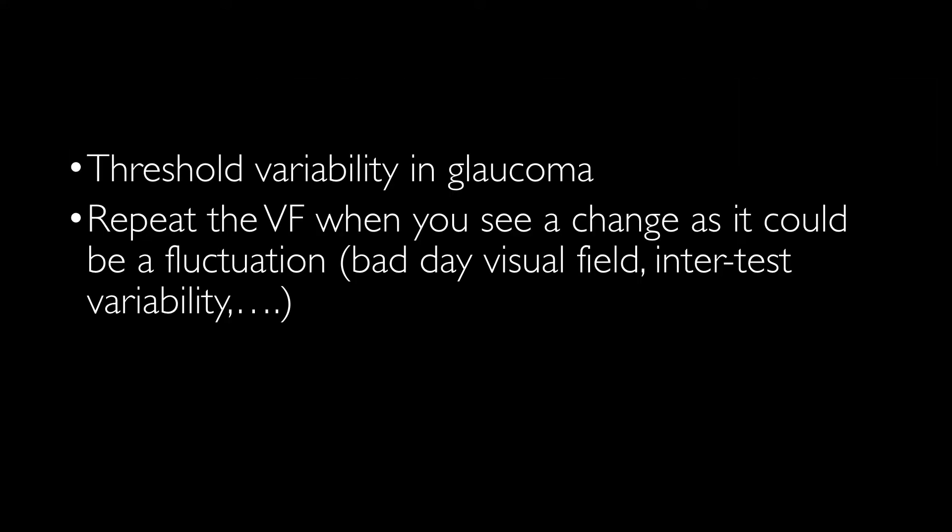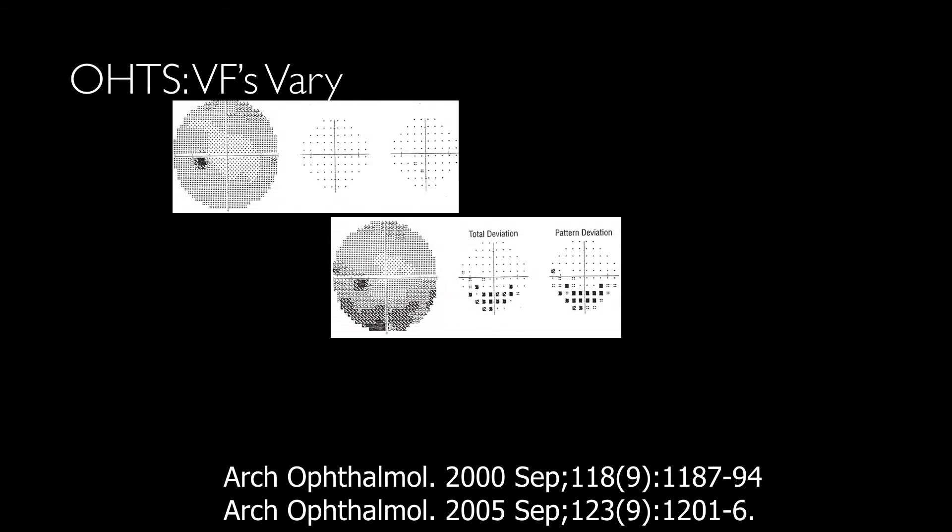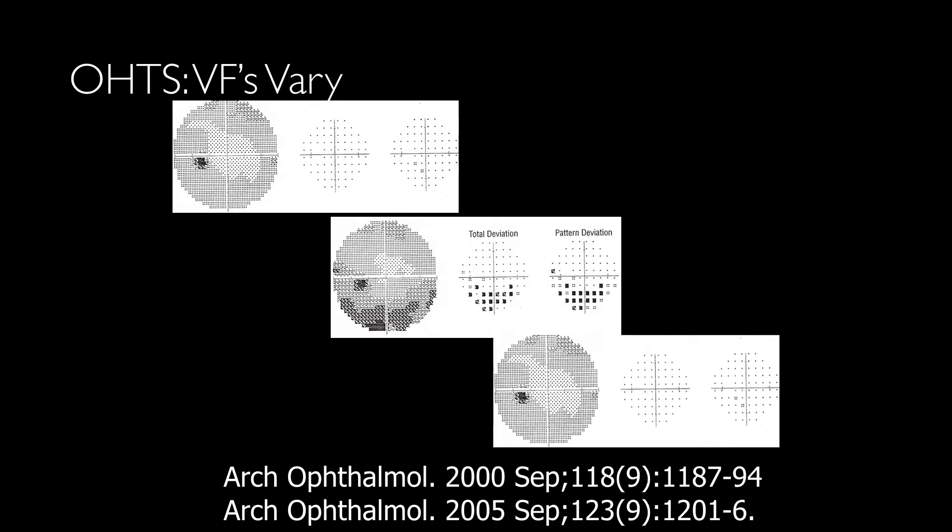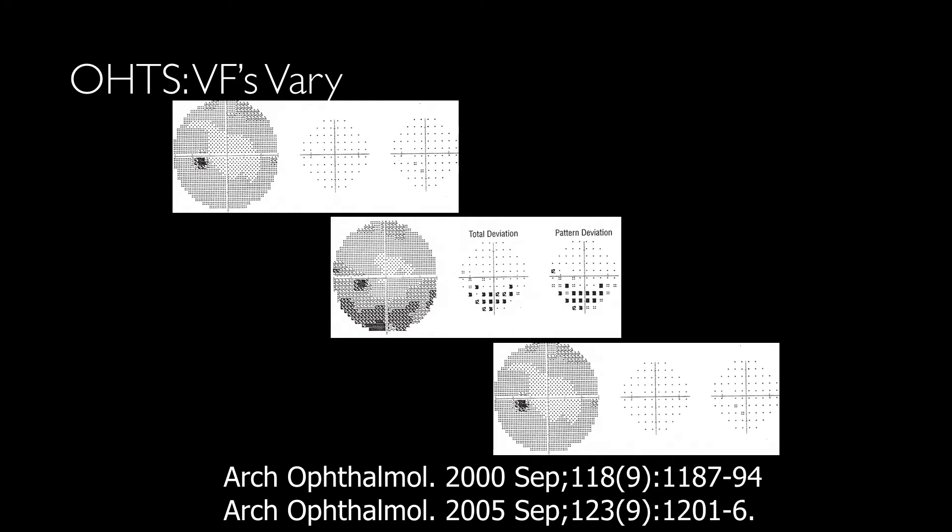Because of threshold variability in glaucoma patients, if we see any changes in the serial follow-up, we need to repeat the test. That's the first step. This slide shows changes in a visual field that disappeared completely with repeating the test.